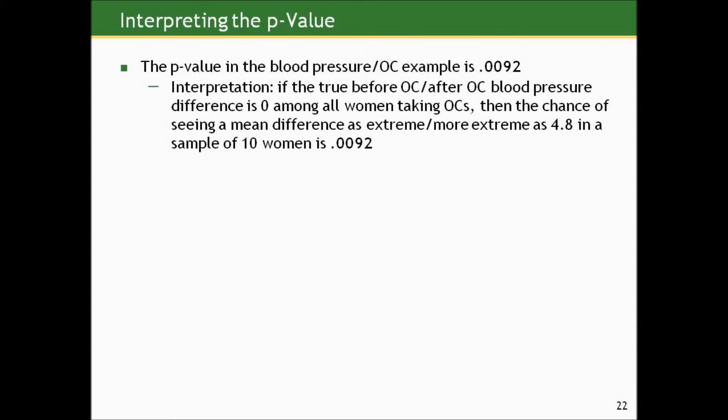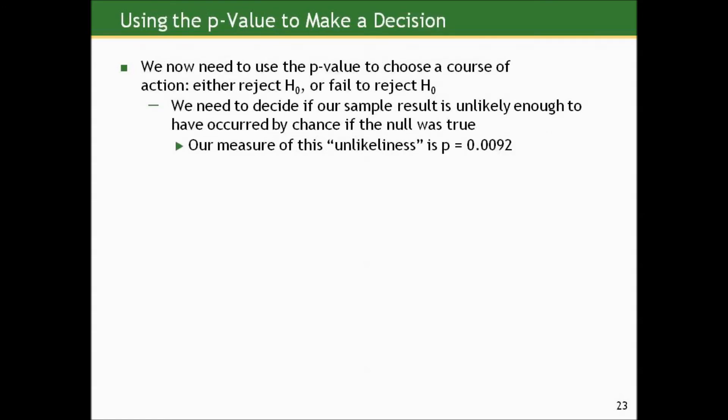The p-value in this blood pressure oral contraceptives example is 0.0092. If the truth were the null — that the after minus before oral contraceptives blood pressure difference is zero among all women taking oral contraceptives — then the chance of seeing our results, a mean difference of 4.8 or something even less likely in a sample of 10 women, is 9 out of 1,000. We still need to choose between the null and the alternative hypothesis, and decide if our sample result is unlikely enough to have occurred by chance if the null was true.